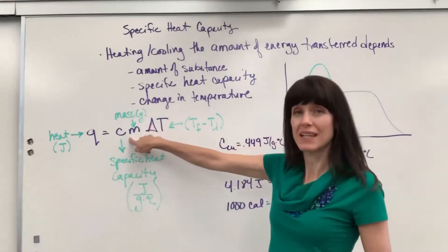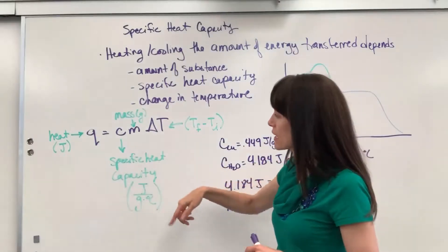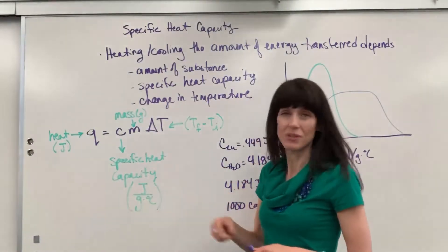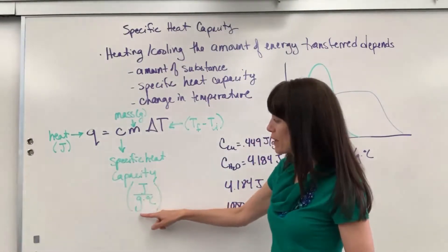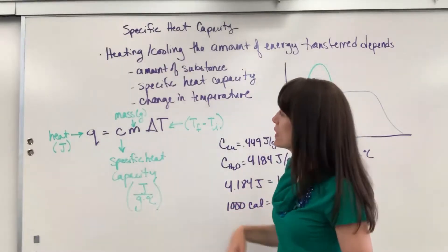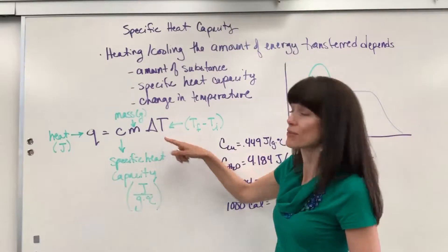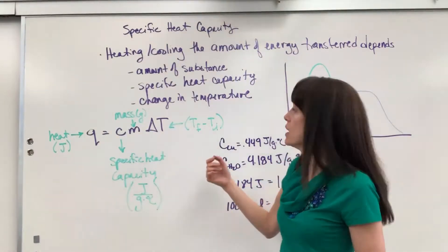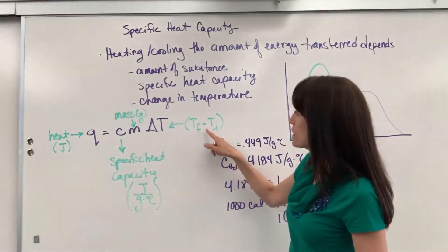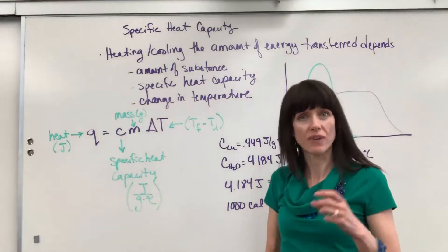C here is our specific heat capacity. We'll talk about that in just a second. Notice the unit on this: joules divided by gram times degree C. M is for mass and that's going to be in grams, and then delta T. Of course this is change of temperature, and so this is going to be T final minus T initial. We always do final minus initial.